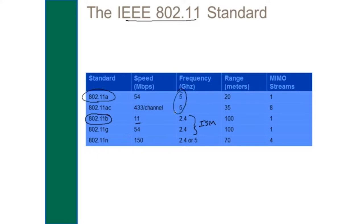When contrasting wireless standards, there's more to consider than just bandwidth. We might also be concerned about range, and about legacy devices that might not work with new standards. When we got to 802.11g, we were able to equal the throughput and speed in megabits per second at the 2.4 gigahertz frequency.